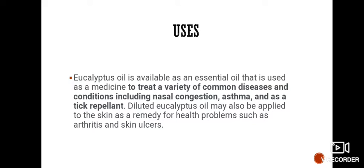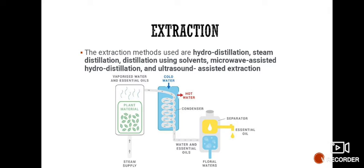Uses of eucalyptus oil: Eucalyptus oil is available as an essential oil that is used as a medicine to treat a variety of common diseases and conditions, including nasal congestion, asthma, and as a tick repellent. Diluted eucalyptus oil may also be applied to the skin as a remedy for health problems such as arthritis and skin ulcers.